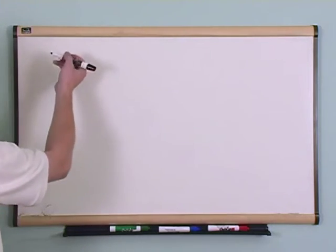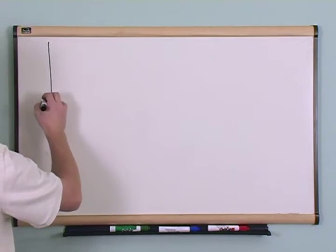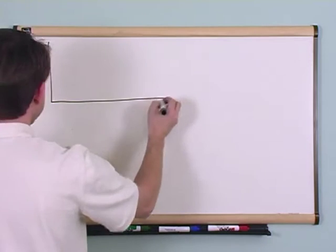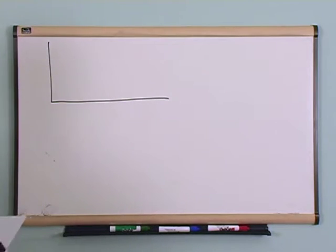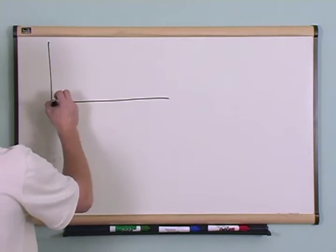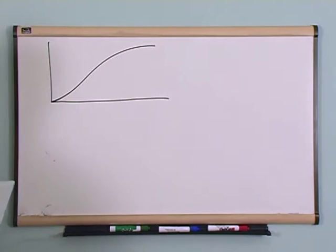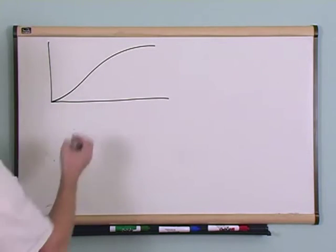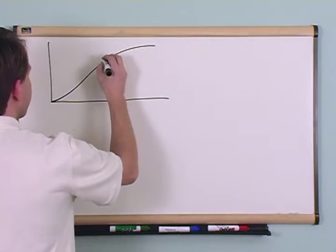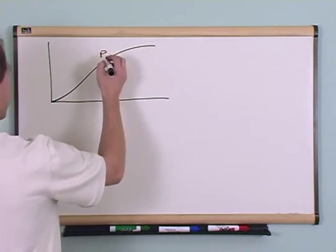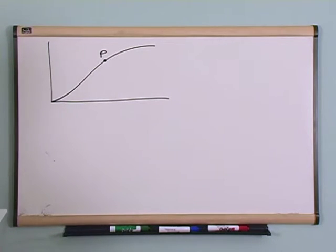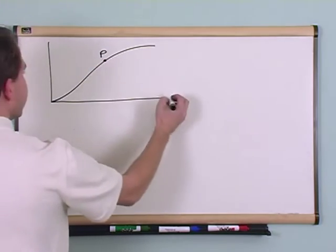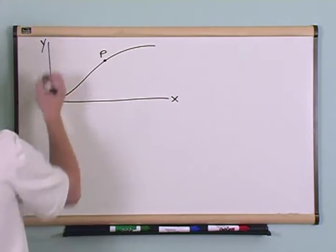What if you have a graph here like this and there's some function on it. Looks like this. Here is a point. I'm going to call it P. Point P. Nothing too crazy so far. This is the x-axis and this is the y-axis.